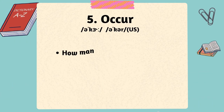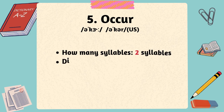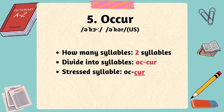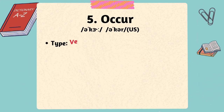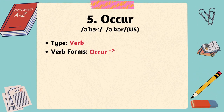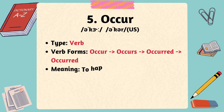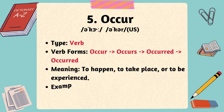The fifth word is occur. The word occur has two syllables with the stress on the second syllable. Occur is a verb and can mean to happen, to take place, or to be experienced. Here are some examples of occur.